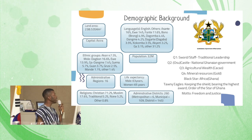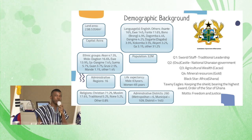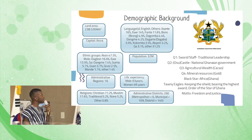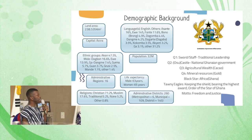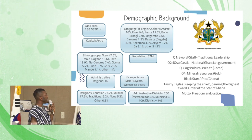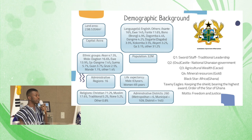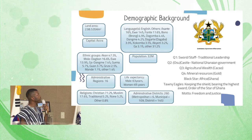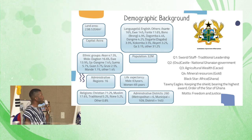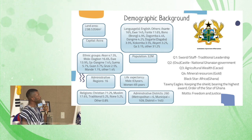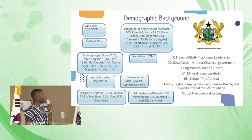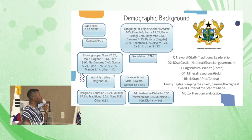In Ghana, Christians dominate, making up 71.2%, Muslims 17.6%, traditional 5.2%, and the rest. The official language of Ghana is English. Aside from English, we have other languages such as Asante Twi, Ewe, Fanti, Bono, Dagbani, and the rest.